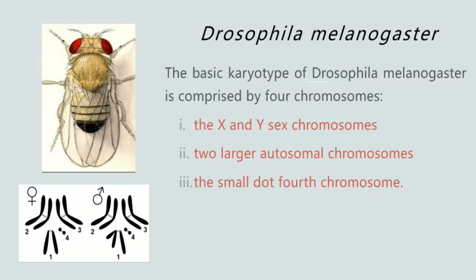The karyotype of Drosophila consists of 4 chromosomes, out of which 3 are autosomal chromosomes. As seen in this figure, chromosome 1 is the sex chromosome, which is XX in case of females whereas it is XY in case of males. Chromosomes 2 and 3 are the large autosomal chromosomes, whereas chromosome 4 is the smallest chromosome and it appears as a dot.